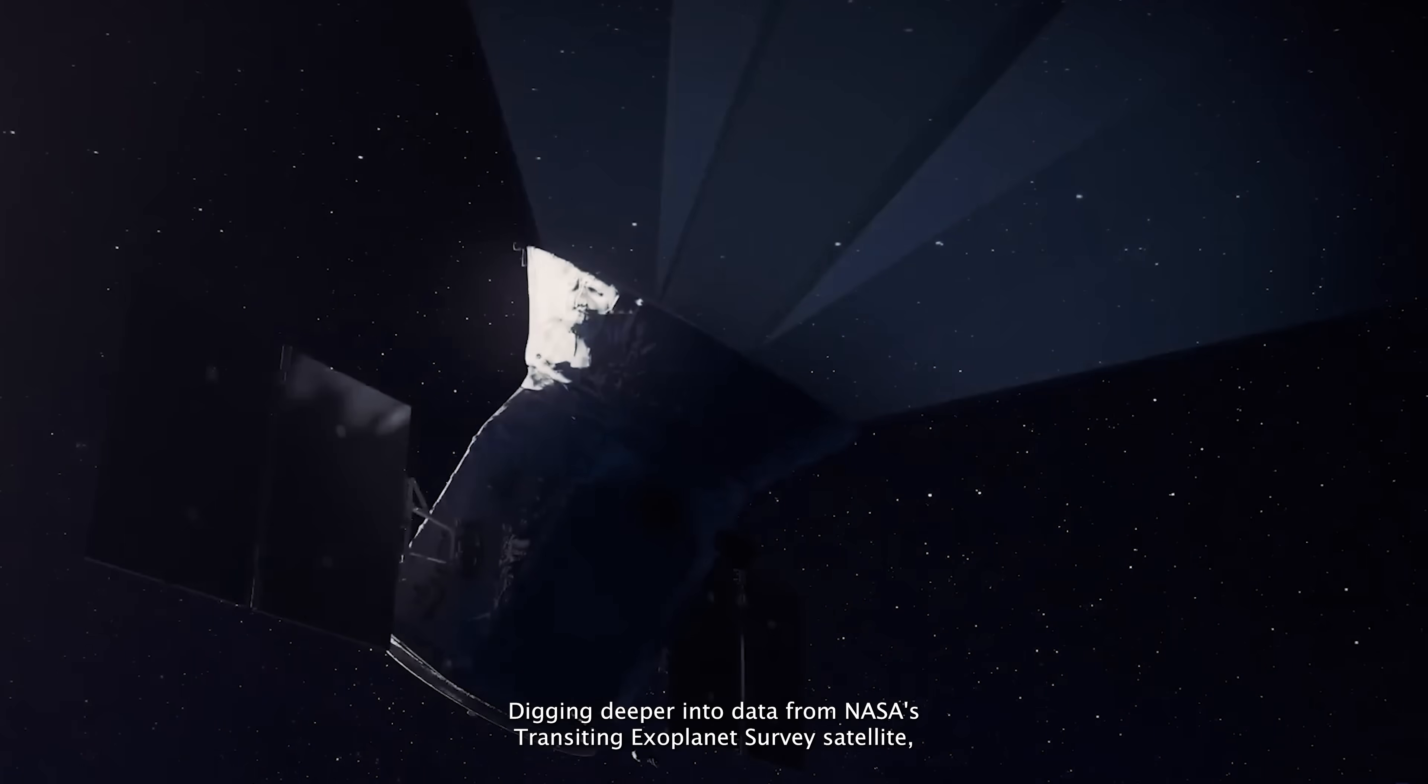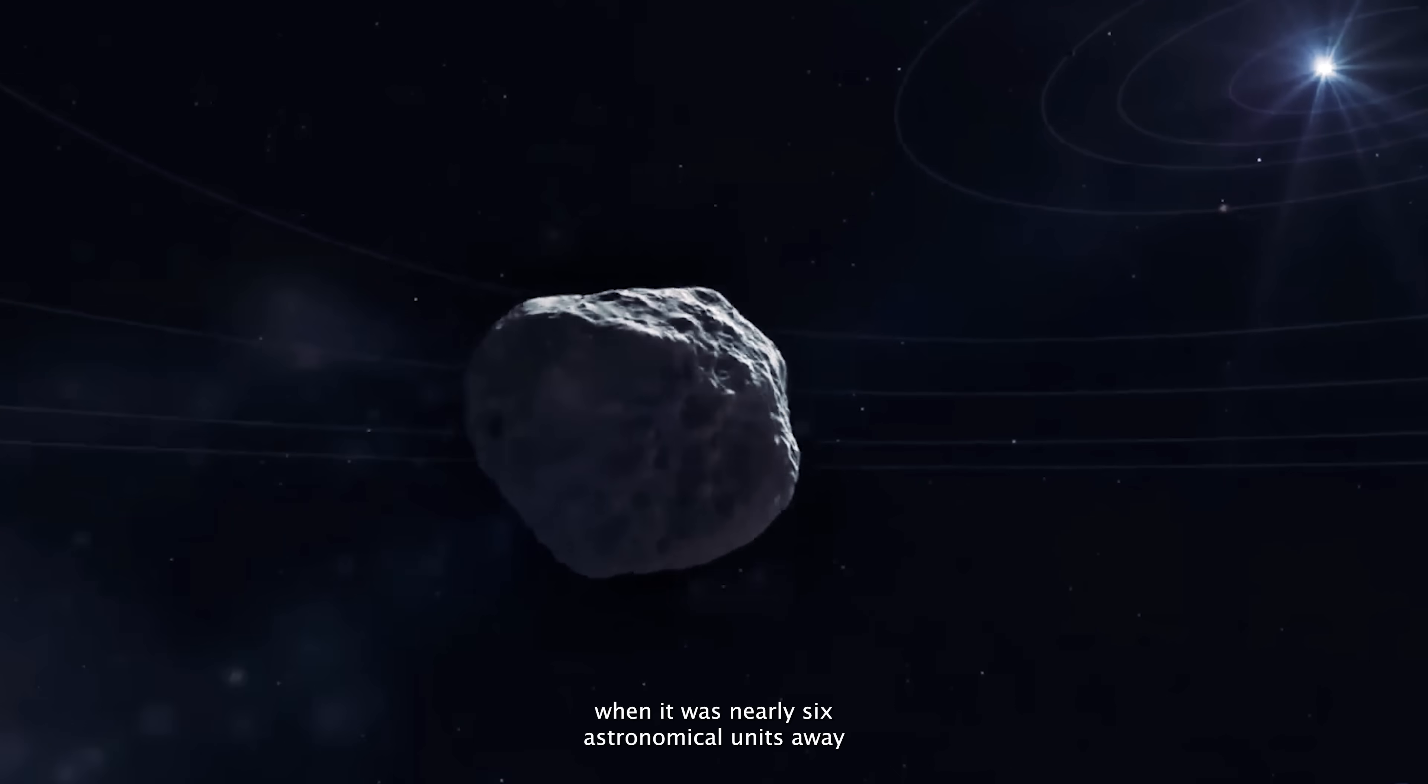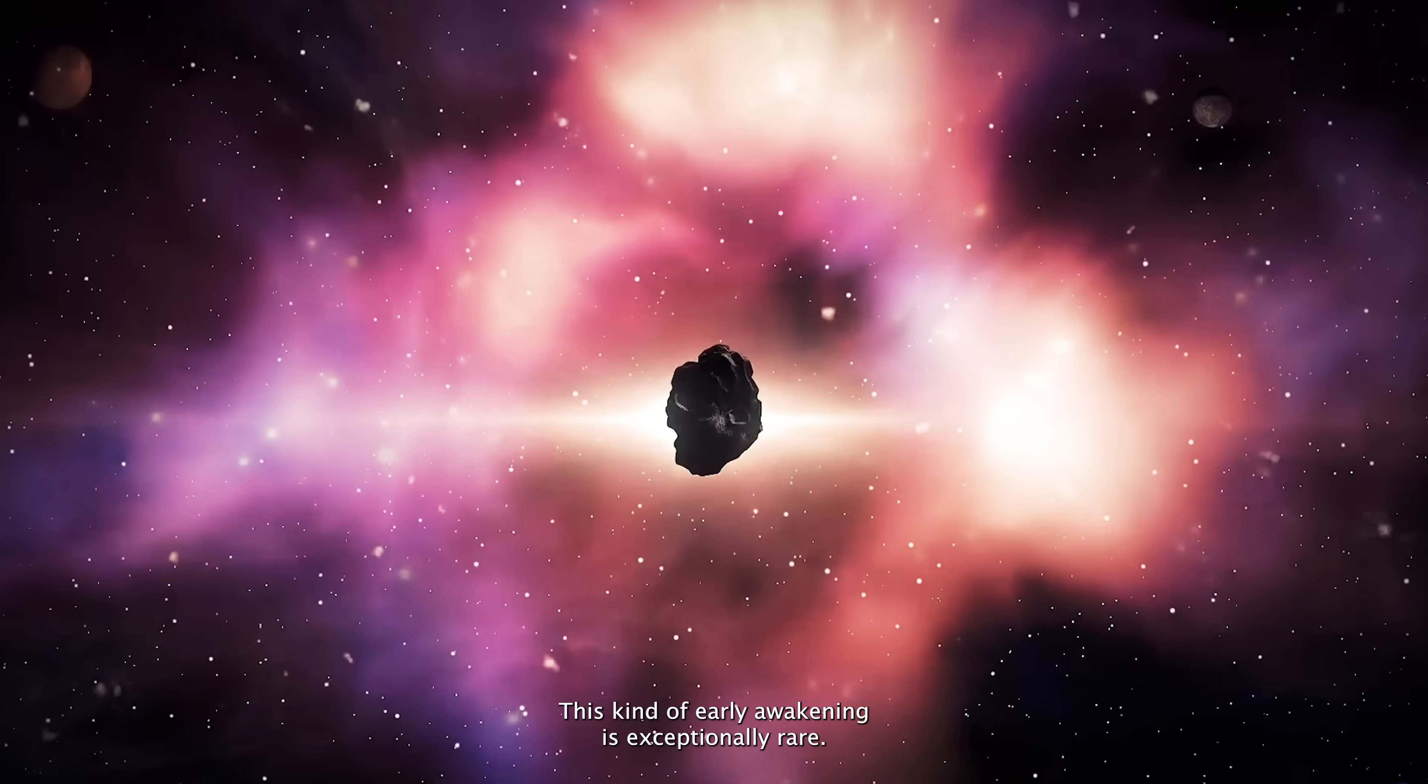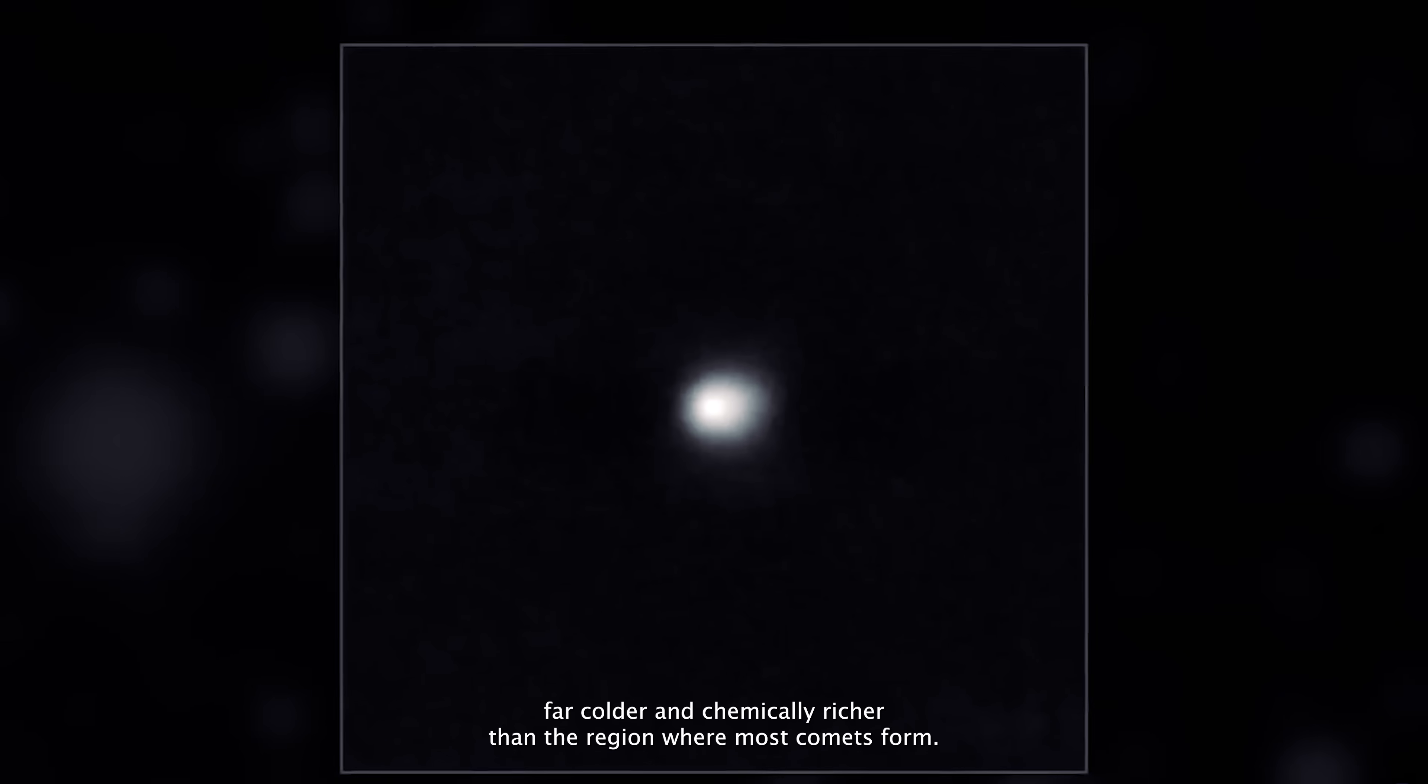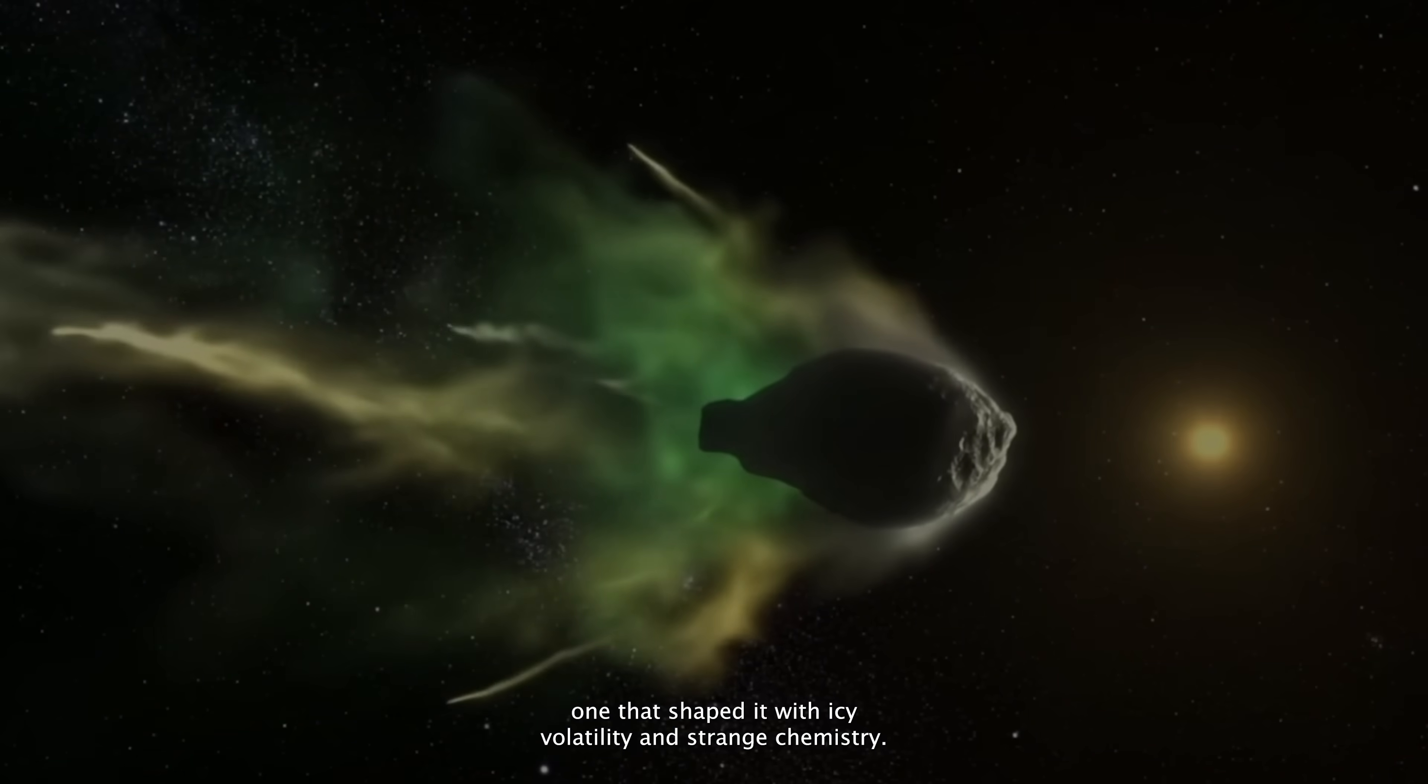Digging deeper into data from NASA's Transiting Exoplanet Survey Satellite, astronomers found evidence that 3i Atlas had already begun stirring to life when it was nearly six astronomical units away, long before it reached the warmer inner solar system. This kind of early awakening is exceptionally rare. It suggests that 3i Atlas was forged in an environment far colder and chemically richer than the region where most comets form. Its composition tells the story of a distant star system, one that shaped it with icy volatility and strange chemistry.